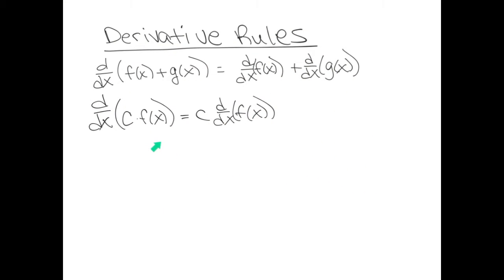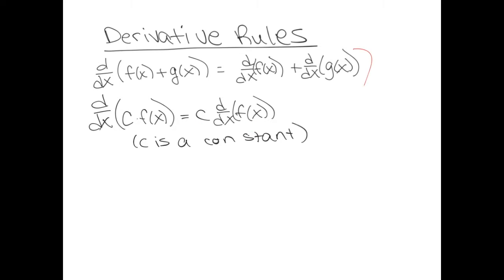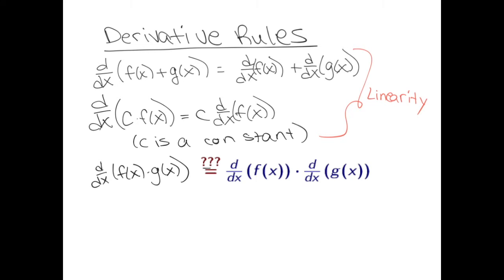Let's review the rules for derivatives. If two functions are added together, it is okay to take the derivative of the first plus the derivative of the second. If a function is multiplied times a constant c, then the constant c can be pulled out as a multiplier, and then you can take the derivative of the function itself. These two rules are called linearity. Now, what if we had two functions multiplied together, f of x times g of x, and we wanted to take the derivative of that quantity? Is it okay to just take the derivative of the first function and multiply times the derivative of the second function? I hope you recognize this is completely false. You cannot do this.